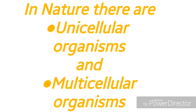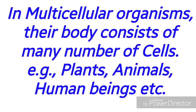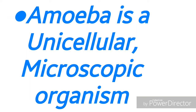When we observe nature, there are two types of living organisms: unicellular organisms and multicellular organisms. In unicellular organisms, their body consists of a single cell — examples are amoeba, chlamydomonas, bacteria, etc. In multicellular organisms, their body consists of many number of cells — examples are plants, animals, and human beings.